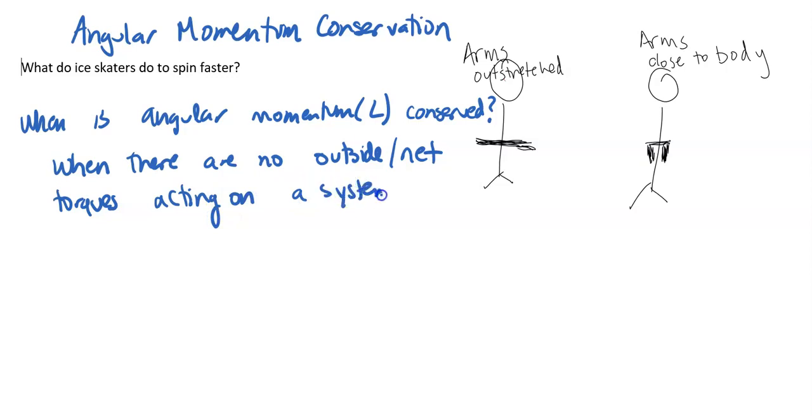So again, if an ice skater is on basically frictionless ice, it's not creating a torque on them spinning. They move their arms from outstretched to inside, no one is pushing on their arm. It's just one closed system, so angular momentum is conserved. And for linear momentum, linear momentum is conserved when there are no outside net forces or impulses acting on a system.